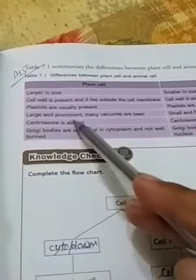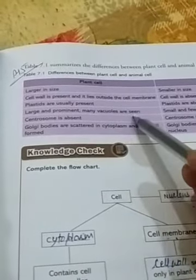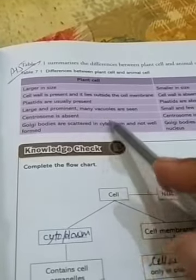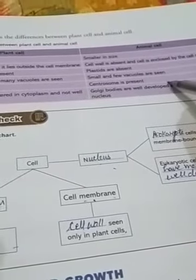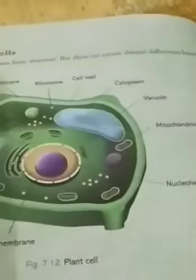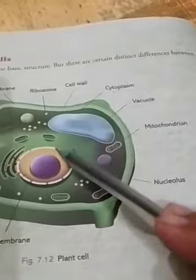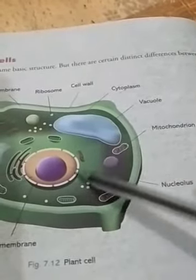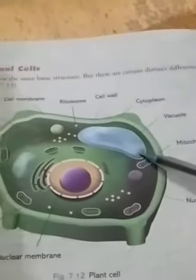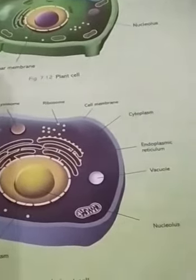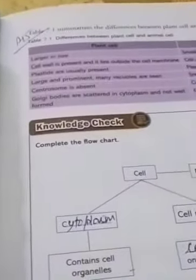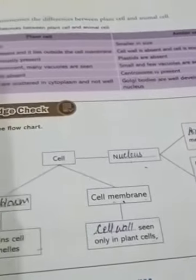The fourth difference: large and prominent vacuoles are seen in the plant cell, while small and few vacuoles are seen in the animal cell. You can see it here — this is a large vacuole occupying a lot of space in the plant cell. While in the animal cell, they have only small vacuoles.